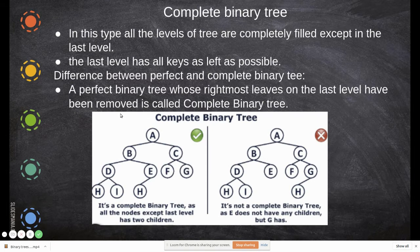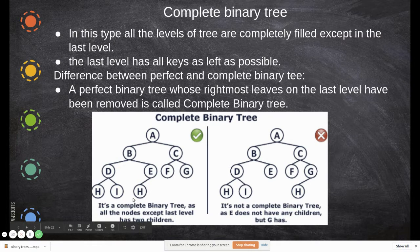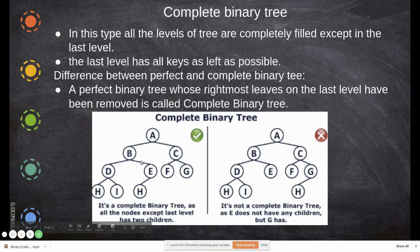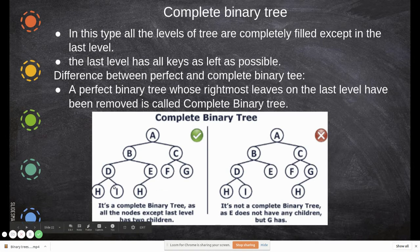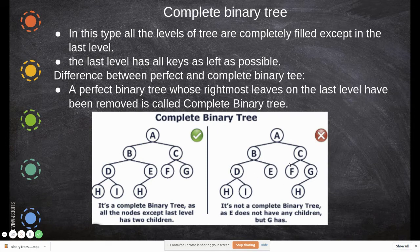Complete binary tree: in this type, all levels of the tree are completely filled except the last level. The last level — which contains the leaf nodes — has all keys as far left as possible. Even if a node has only one child, that child must be the left child. So here the left is filled, and here also the left is filled — having no right child is okay.